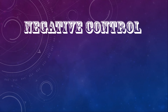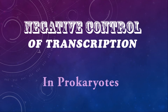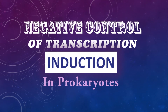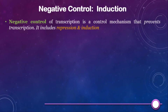Welcome to Learn Microbiology. In this video we will study another mechanism of negative control of transcription in prokaryotes, and that is induction. Negative control of transcription is a control mechanism which prevents transcription when the gene products are not required by the cell. There are two mechanisms of negative control.